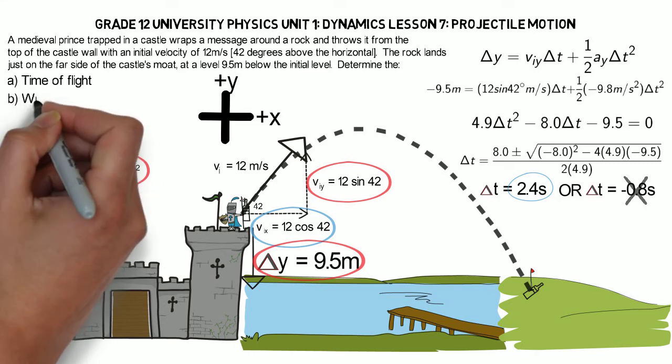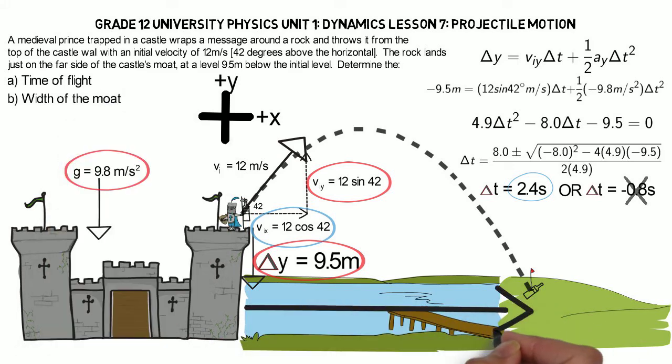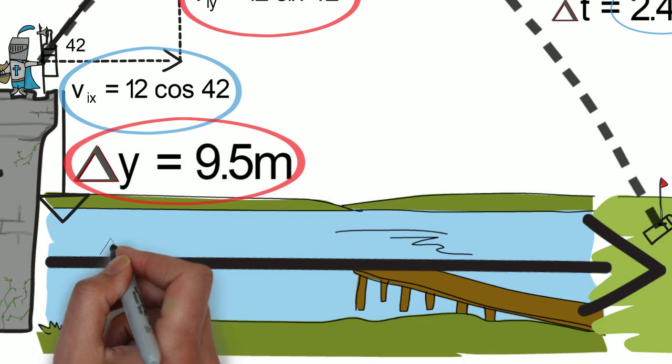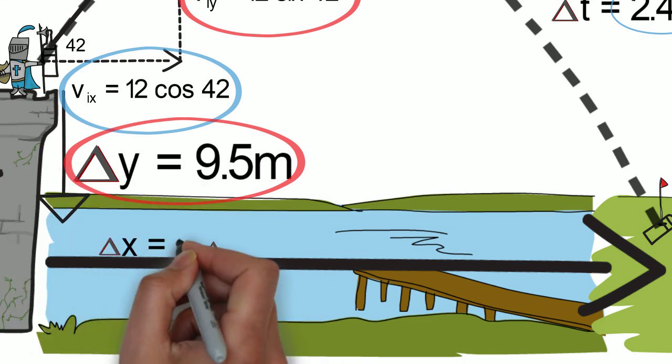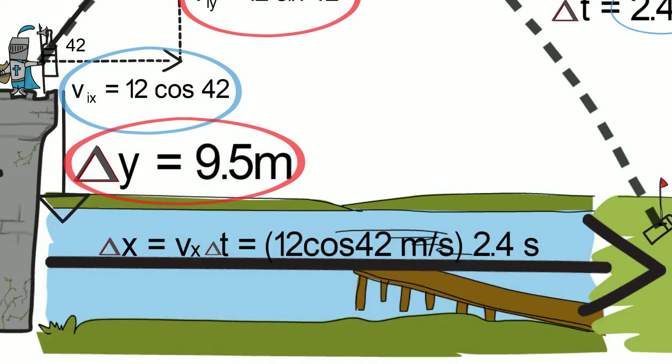Part B, the width of the moat. Since we now know the time and we know our velocity in X, we can figure out the width of the moat. And since there's no acceleration in X, our displacement in X or the width is simply our velocity in X times time, which gives us 21.4 meters.